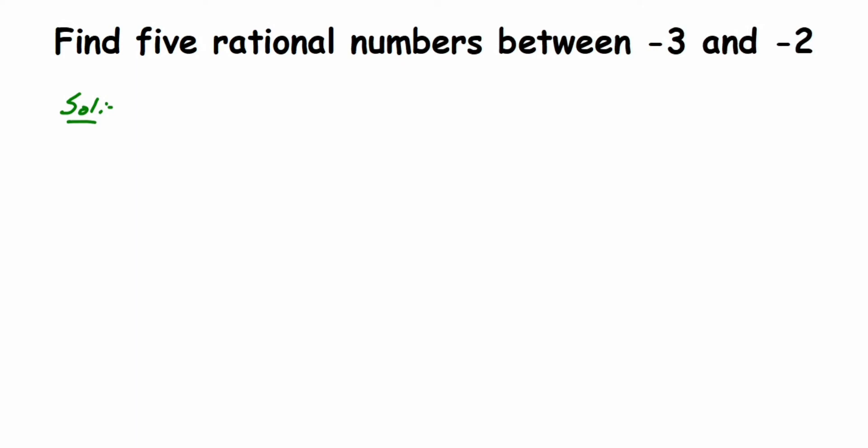We know that minus 3 can also be written as minus 3 over 1 — it is a rational number. To find the equivalent rational number, you can either multiply or divide the numerator and denominator by the same number. Here they're asking us to find five rational numbers, so you can multiply by any number greater than five, starting from six, so that you get a minimum of five rational numbers between them.